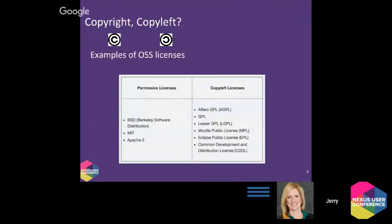A couple of examples — some permissive or liberal licenses: the BSD (Berkeley Software Distribution), the MIT, and Apache 2. These are things you're going to see all the time; they're very common. In general, they just say you can use these however you like, but you have to acknowledge us — you have to include these licenses with the software if you distribute it.